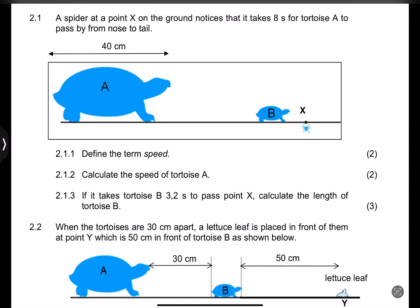They say to us calculate the speed of tortoise A. Now what I want us to check here: remember that tortoise A is 40 centimeters long and it passes point X in just 8 seconds. So remember we can use our equations of motion: S equals UT plus half AT squared. But because we're dealing with constant velocity or constant speed, we're going to get rid of this part because our acceleration is zero. The distance is 40 centimeters. We should convert that to meters.